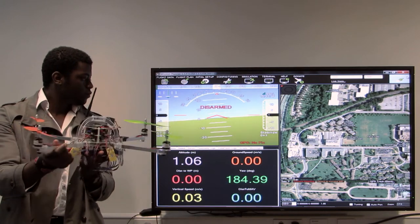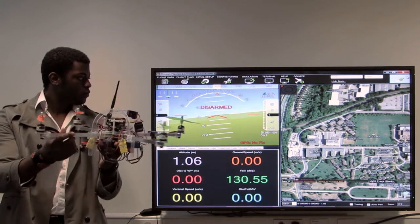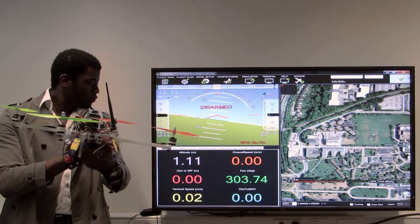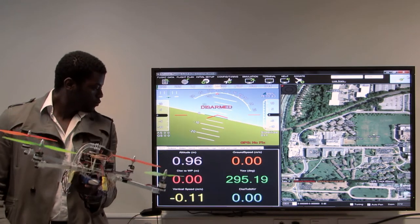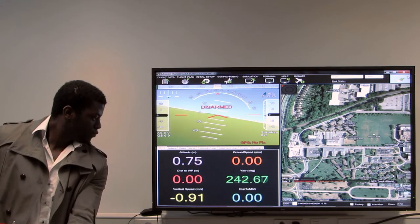It also tracks specific values displayed in the readout below the orientation display. In the readout, the yaw value changes as it is turned. It also tracks its vertical speed and altitude, both of which rise and drop as I lift and drop the drone respectively.